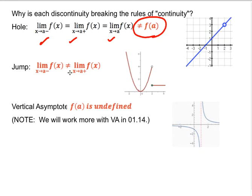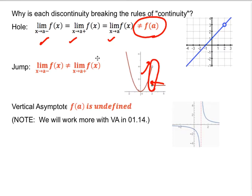Why is a jump a discontinuity? Well, that breaks the first two rules right away. We've seen with jumps that the left-sided limit and the right-sided limit aren't the same. We're looking at a left-sided limit that goes here and a right-sided limit that goes here — those are not the same number. That's why a jump is discontinuous.